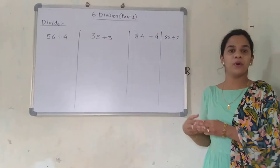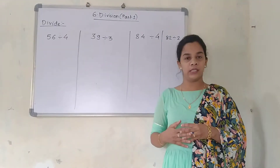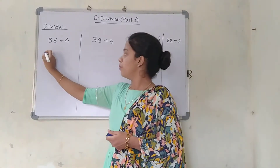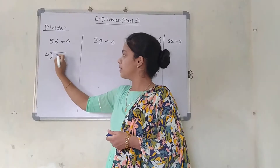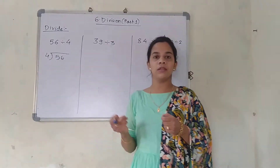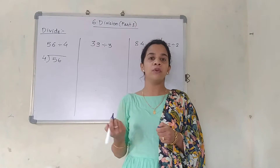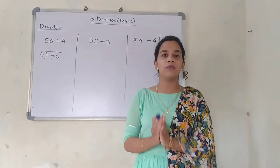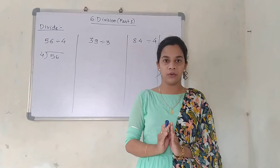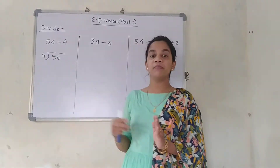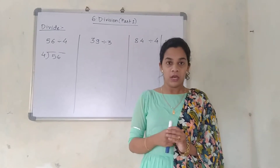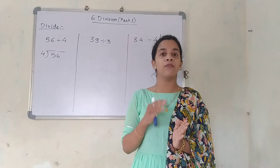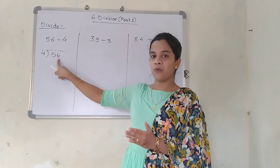Now just seeing the board there are 4 more questions. These are a little different from the earlier ones. The first question is 56 divided by 4. I am going to write 4 here and 56 here. Now there is one change in how you are supposed to solve this. If you know the table of 4, 4 tens are 40. But this number 56 is bigger than 40.